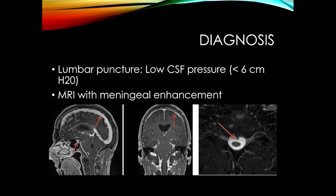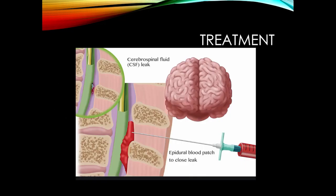To make the diagnosis: MRI scan shows very pronounced meningeal enhancement, and sometimes we can see where the dural tear is located. Lumbar puncture reveals low pressure, confirming the diagnosis. Treatment is just like a post lumbar puncture headache — we take some of the patient's blood, inject it into the epidural space, which seals off the leak, and in many patients this can immediately resolve the headache.